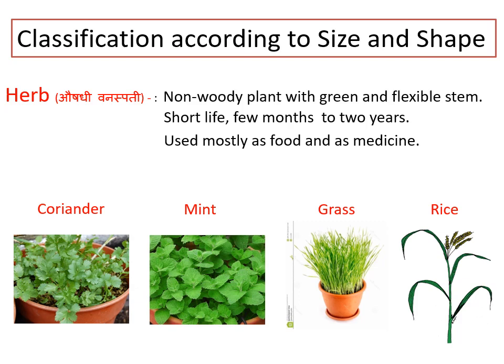That means herbs complete their life cycle in that much period. For example, a coriander plant has a life of 6 to 8 weeks only, while that of a rice plant is 3 to 4 months. These herbs are mainly used as food and as medicine. Examples include coriander, mint, rice, and grass.